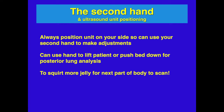What do you do with your second hand? You should always position your unit on the side that you are on so that you can use your second hand to make adjustments. A common beginner mistake is placing the ultrasound on one side and having the probe on the other, assuming someone else will handle saving and freezing. You need to get better at situating the machine closer to you. You can also use your second hand to lift the patient or adjust the bed for posterior lung analysis, or to apply more gel for the next area to scan.